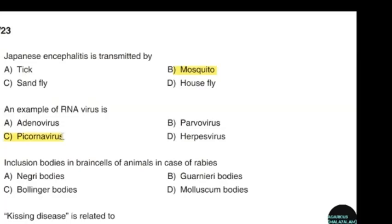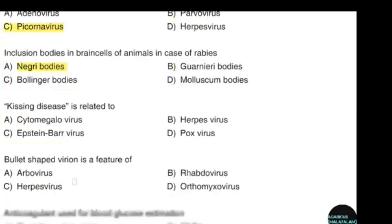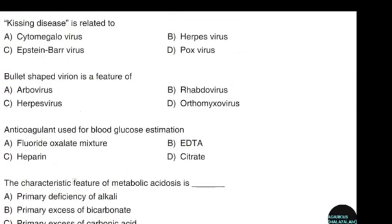Inclusion bodies in brain cells of animals in case of rabies — correct answer option A: Negri bodies. Kissing disease is related to — correct answer option C: Epstein-Barr virus.